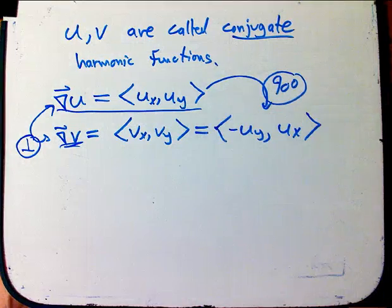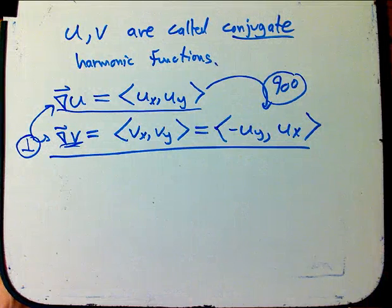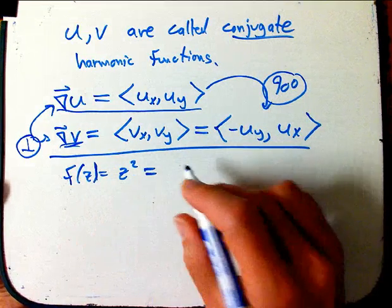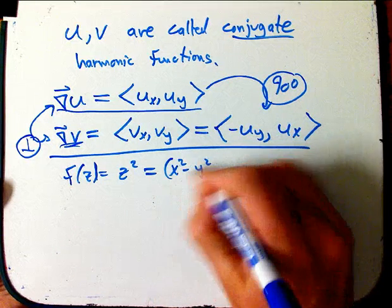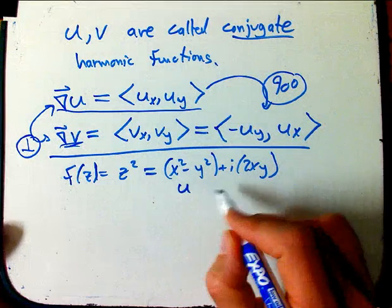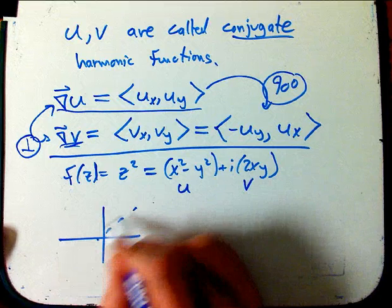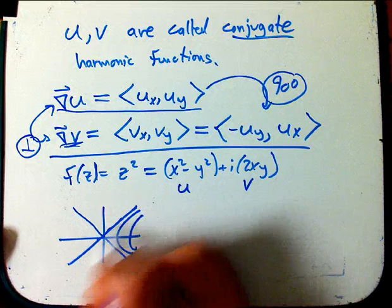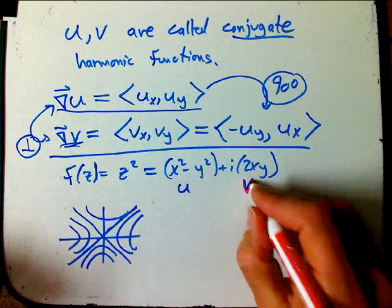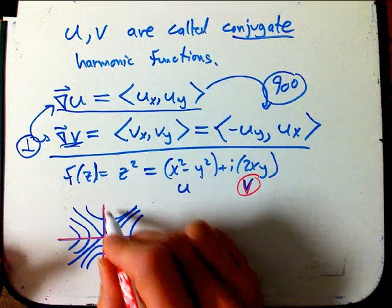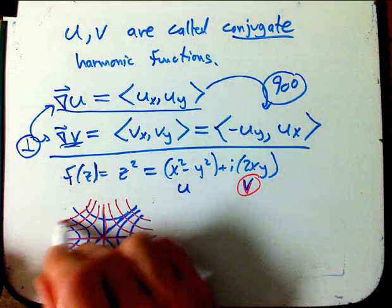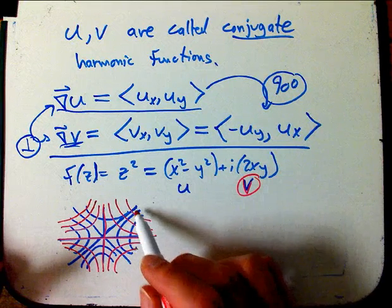Since the gradient vectors are orthogonal, it also means the level curves are going to be orthogonal. For example, let's go back to z squared — f of z equals z squared. That's x squared minus y squared plus i times 2xy in terms of real and imaginary parts. The level curves of u are the hyperbolas with the x equals plus or minus y asymptotes, and the level curves of v are the hyperbolas with the axes as asymptotes. Indeed, these are called mutually orthogonal curves.